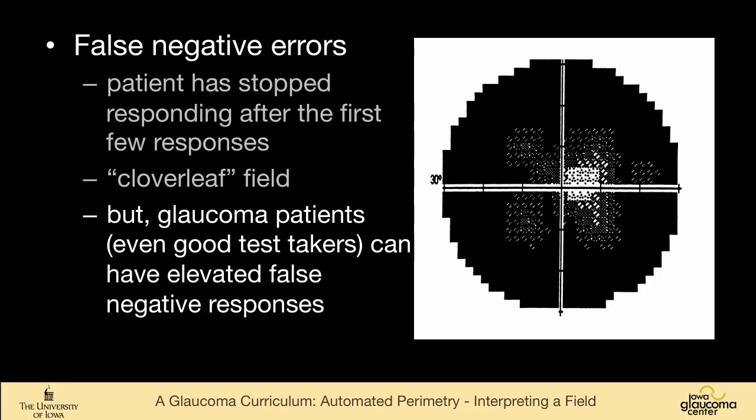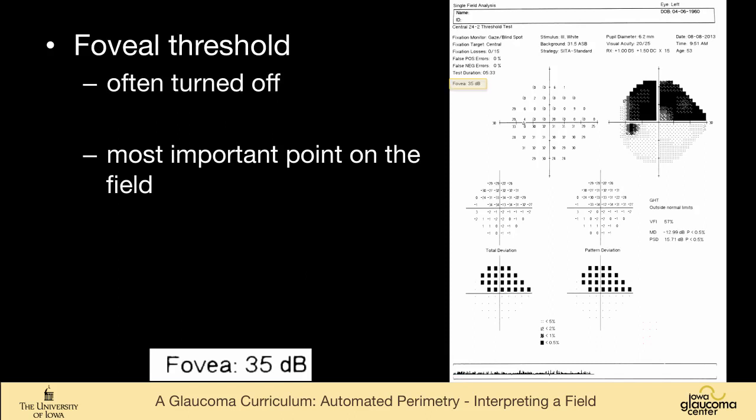It's also important to emphasize that people who have significant glaucoma, even those who are fairly good test takers, can have an elevated false negative response. So false negatives have a little bit less of the reject this field value that false positives do. But if you see a field like this, cloverleaf field, you know that it's somebody who just started the field and then stopped participating.